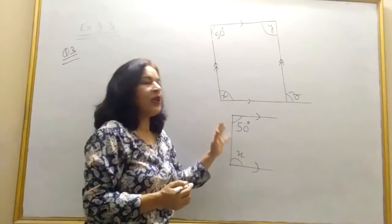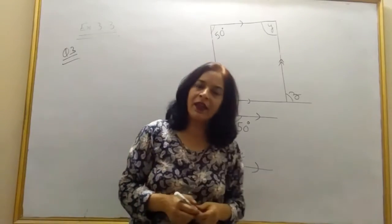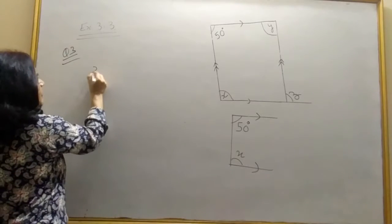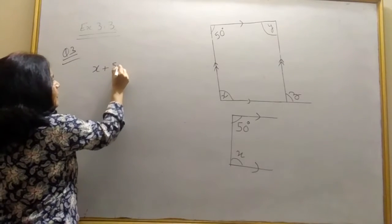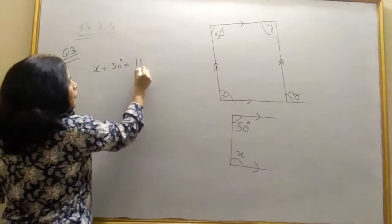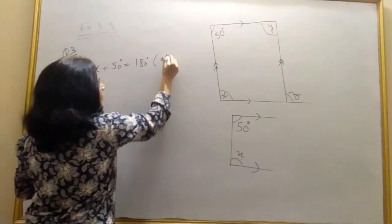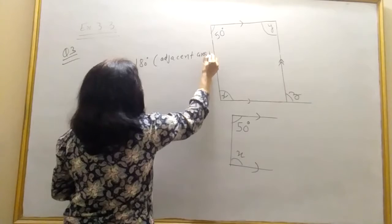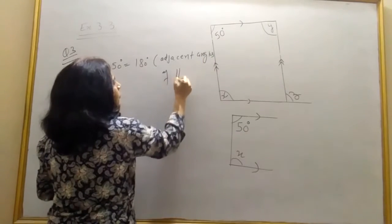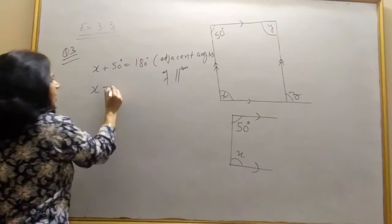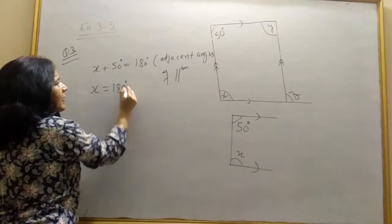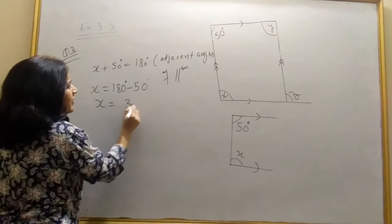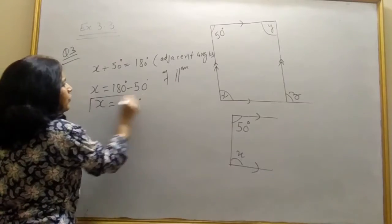Supplementary means their sum is 180 degrees. So x plus 50 degrees is equal to 180 degrees. Adjacent angles of parallelogram. From here x will be 180 degrees minus 50 degrees. x will be 130 degrees.